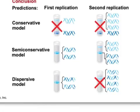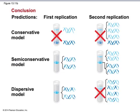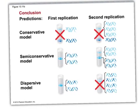So the Meselson-Stahl experiment supports the semi-conservative model where parental DNA serves as the template to make new DNA. Any questions on DNA structure, function, or the Meselson-Stahl experiment? On Wednesday, we'll get into the nuts and bolts of DNA replication.